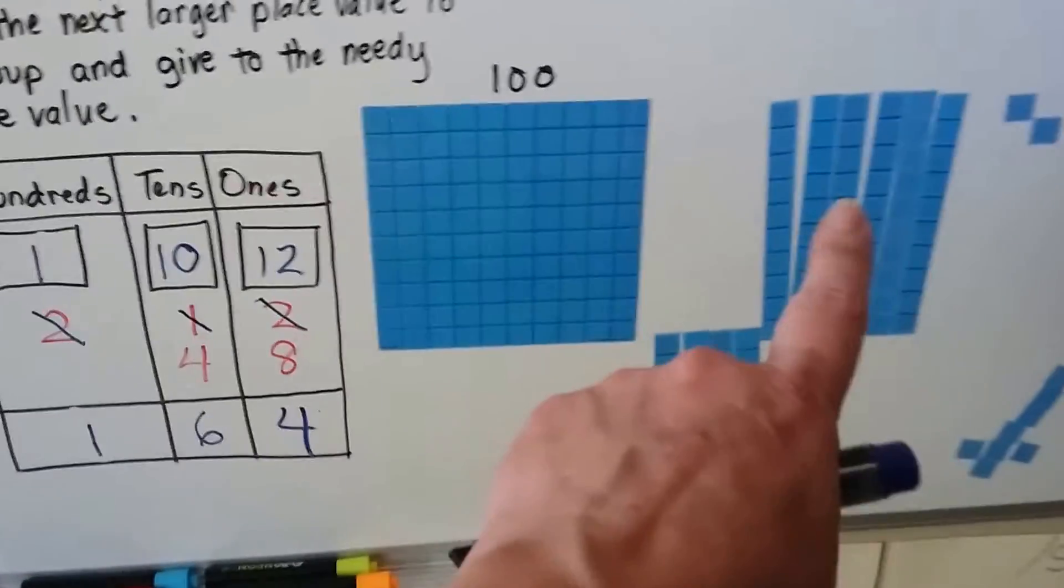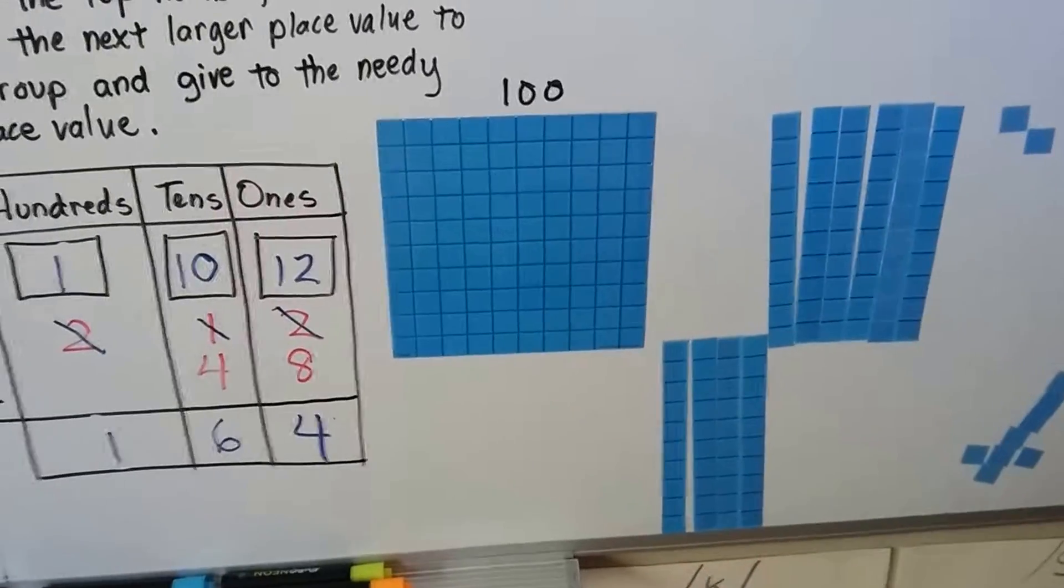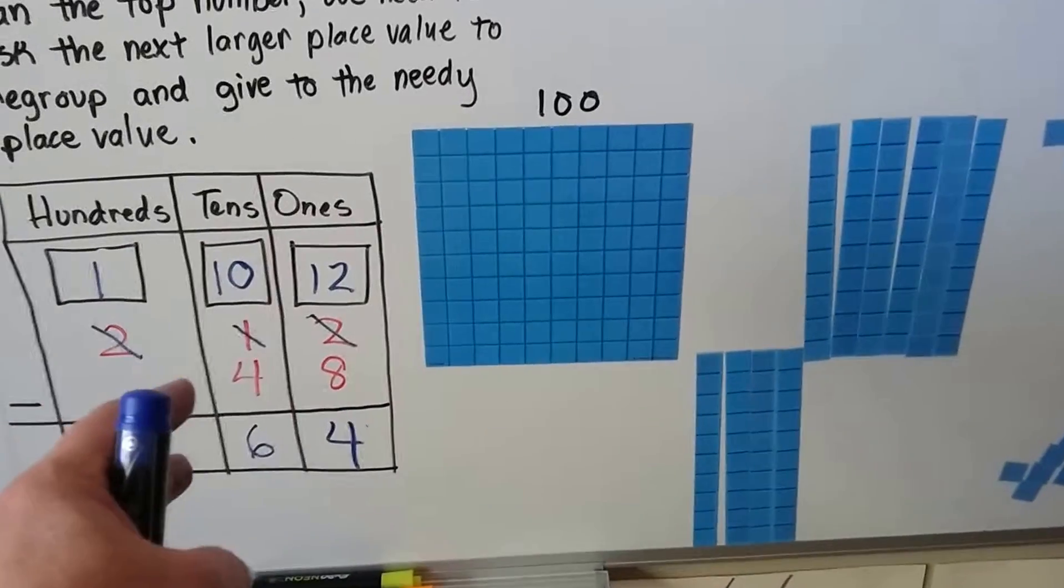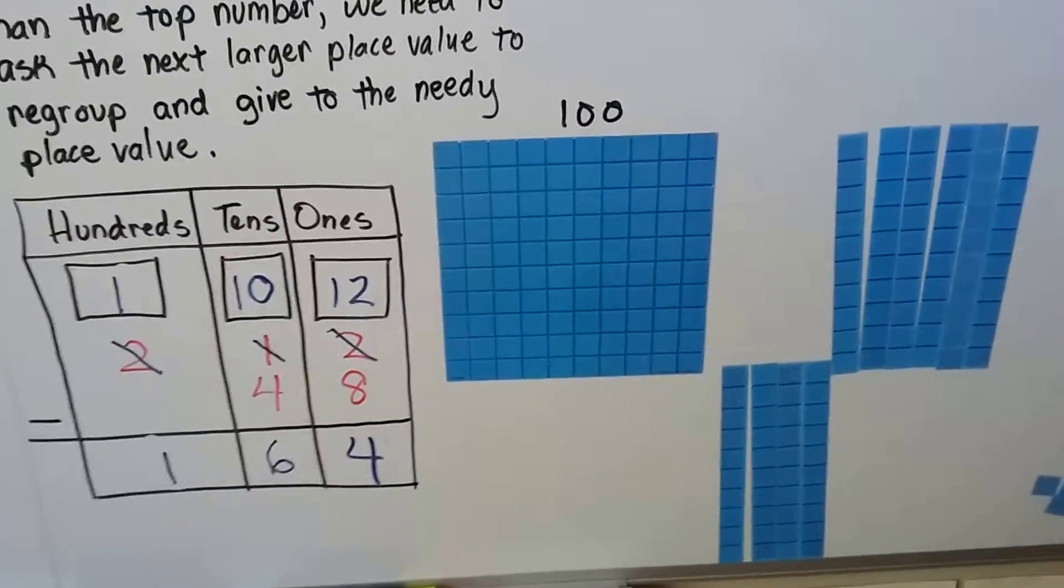So all we did was borrow from the next place value and regroup it.